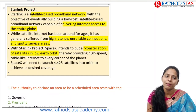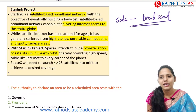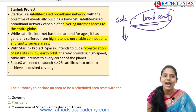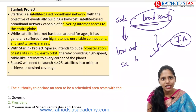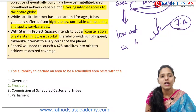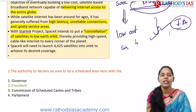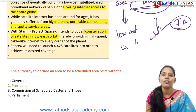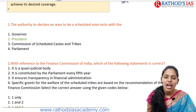Starlink is a satellite-based broadband network. Its important objective is to provide low-cost satellite-based broadband access to the entire globe. While satellite internet has been around for ages, it has generally suffered from high latency and unreliable connections. With the Starlink project, a constellation of satellites is placed in low Earth orbit to provide high-speed, cable-like internet. They are going to launch about 4,425 satellites into orbit.